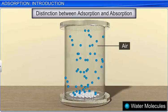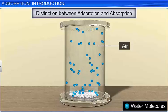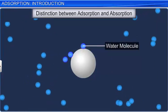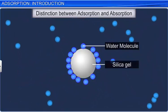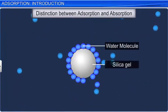Another example is the action of water vapor. Water vapor adheres to the surface of silica gel. This is an example of adsorption, since the molecules are retained on the surface of the adsorbent.